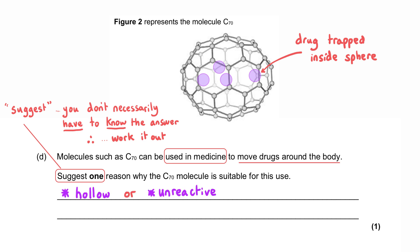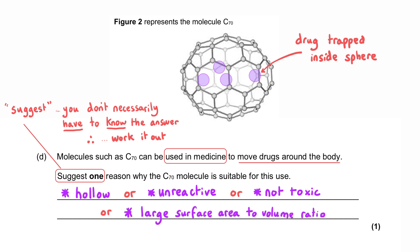Additionally, this type of fullerene is unreactive, meaning no undesirable side reactions will occur inside the body. They are also non-toxic, so they won't cause harm to the patient. One final option is that C70 has a very large surface area to volume ratio, which makes it suitable for many different uses, including as a drug delivery vehicle in medicine.